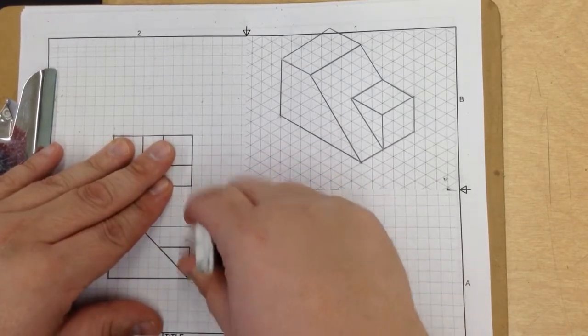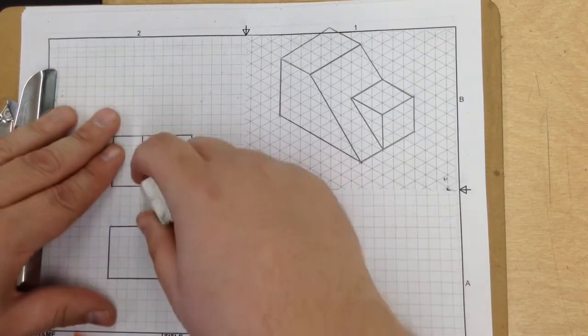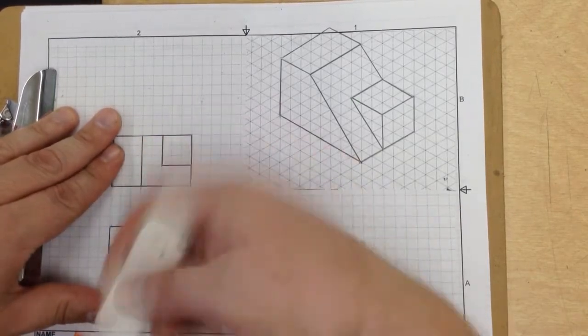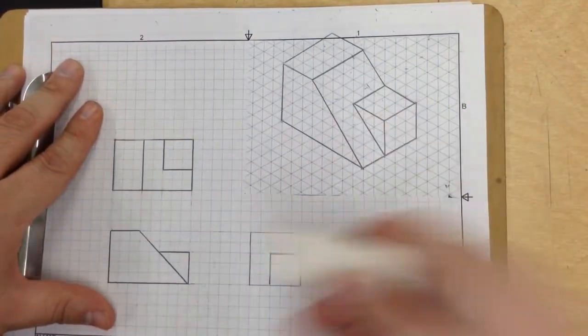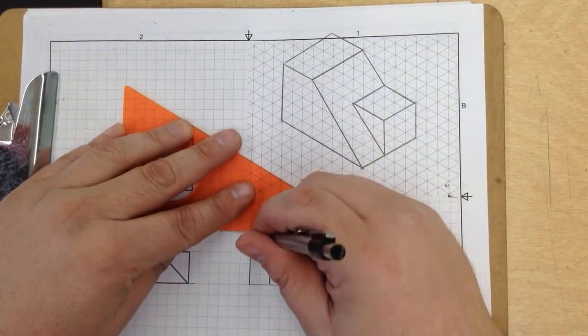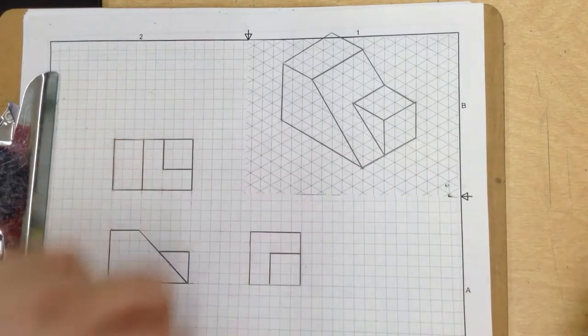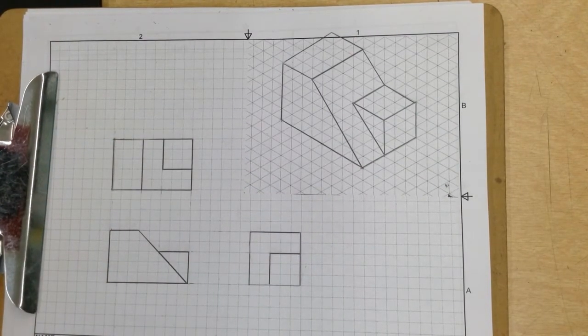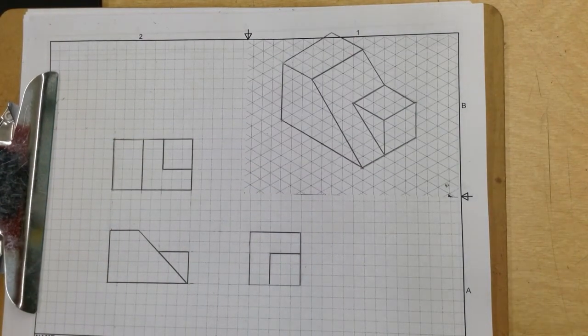Erase the lines that don't belong there. Erase our construction lines. And there you have it. Let me darken up this object line just a bit. Go ahead and stop this video. Rewind and replay as many times as you need in order to get the concept.